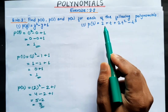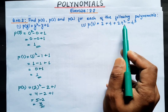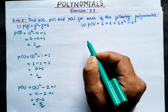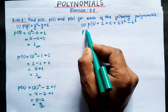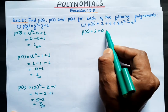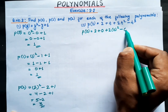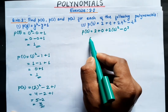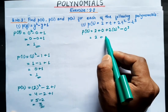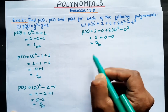Now the second polynomial is p(t) = 2 + t + 2t² - t³. For P0, put t = 0: 2 + 0 + 2(0²) - 0³, which gives 2 + 0 + 0 - 0 = 2. So P0 = 2.